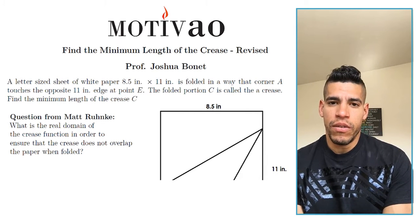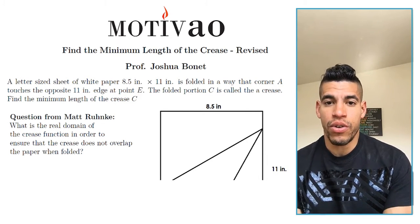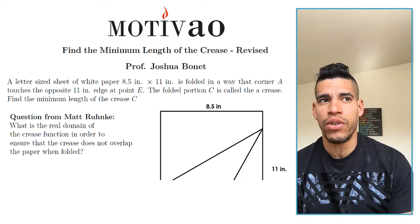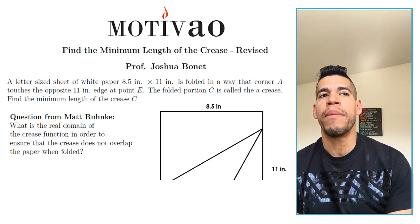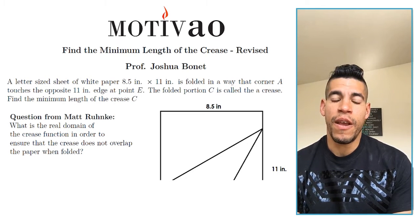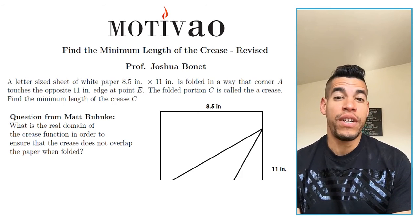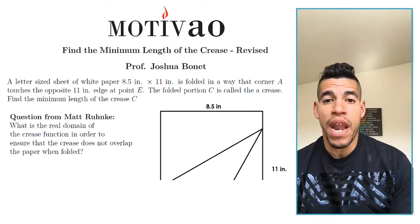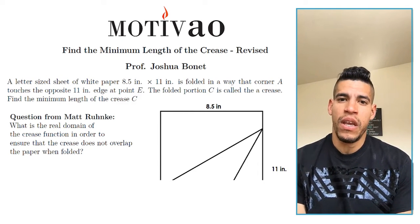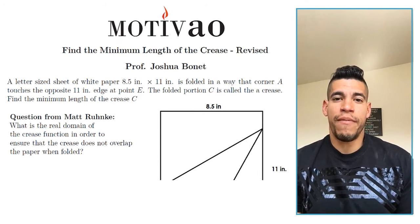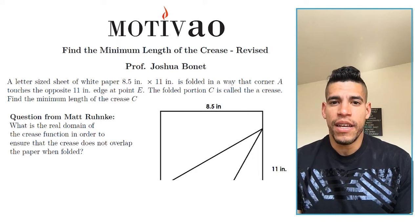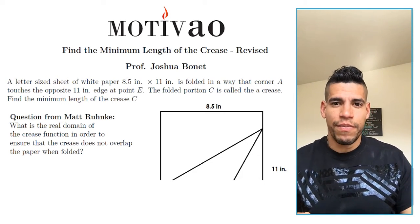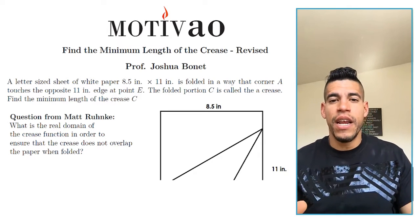Everything in the original video is valid and true, but Matt's question was: what is the real domain of the crease function in order to ensure the crease does not overlap the paper when folded? In my videos, that question is really not answered, and it bothered me because it's a very valid mathematical question. If the application is not aligned with the math, it's pretty useless.